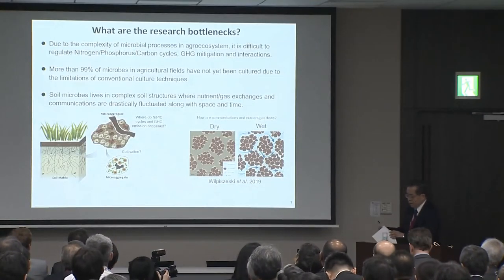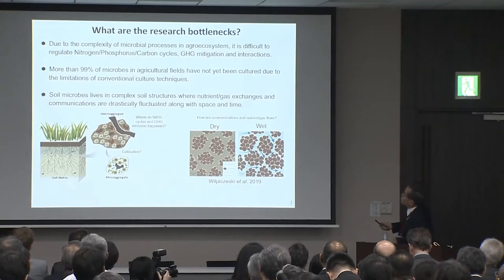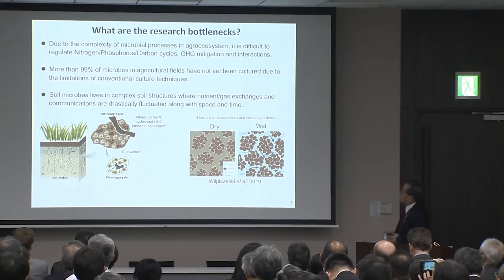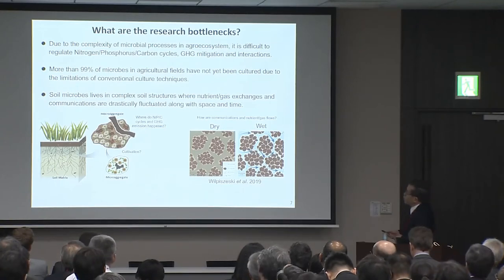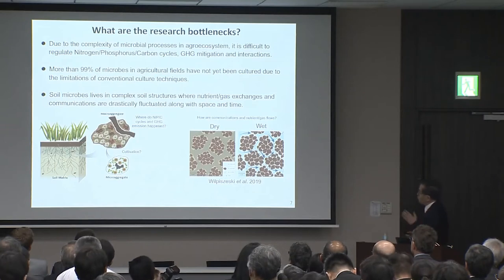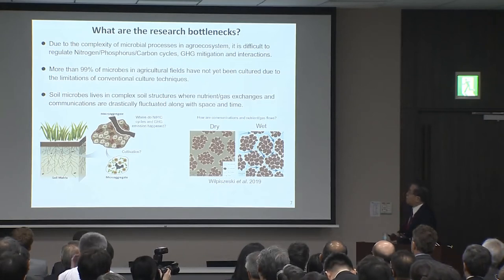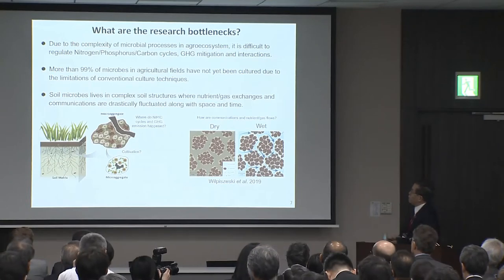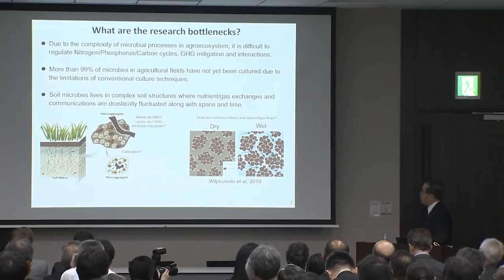Symbiotic nutrient absorption has attracted attention as a means to replace chemical fertilizer in sustainable agriculture. So what are the research bottlenecks in the academic fields? Due to the complexity of microbial processes in the agroecosystem, it is difficult to regulate the nitrogen-phosphorus-carbon cycle, greenhouse gas mitigation, and interactions. More than 99% of microbes in agriculture fields have not yet been cultivated due to limitations of conventional culture techniques. Thirdly, soil microbes live in complex soil structures where nutrient-gas exchange and communication are drastically fluctuated along with space and time.